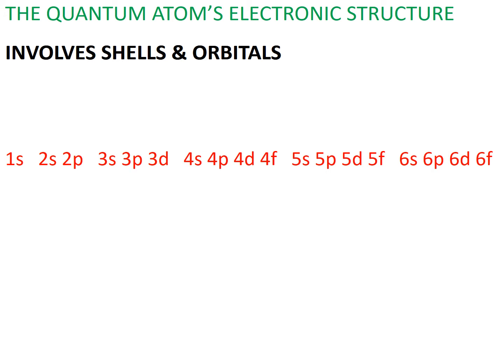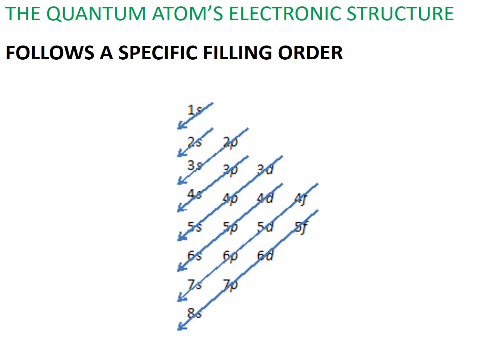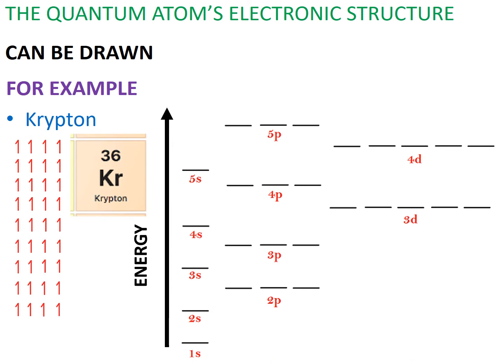And while these are the shells and their respective orbitals available for electron filling, this is not the exact order in which these orbitals are actually filled. This is. Krypton has 36 electrons. If we wanted to show Krypton's electronic structure or configuration, we would need to draw this, and then fill each orbital accordingly.